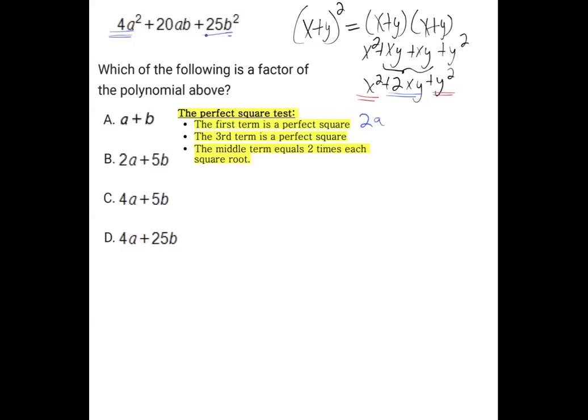Is the third term a perfect square? And you test it out by taking the square root. The square root of 25b squared is 5b. And is the middle term equal to two times each of those things? So 2 times 2a times 5b is 20ab.